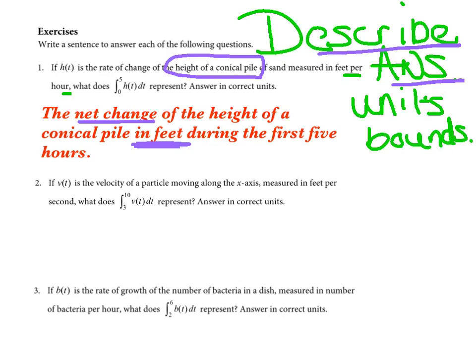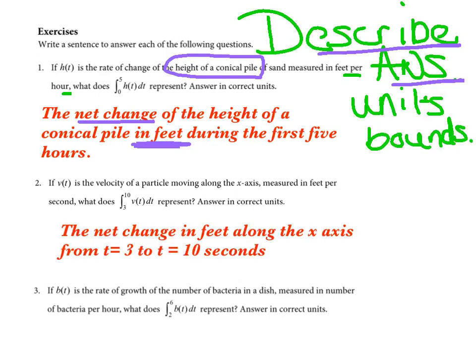All right, give me a great sentence for number two. Pause it and see if we can get the same answer. All right, so again I said the net change, so I'm starting with change, in feet. Because I had feet per second, so when I integrate v of t, I should be getting feet along the x-axis. That's just how they described it, from. And this time I was more specific. I said from t equals three, two equals ten, those are my bounds. And those units, three to ten, represent seconds in this problem. So hopefully you had the same thing.